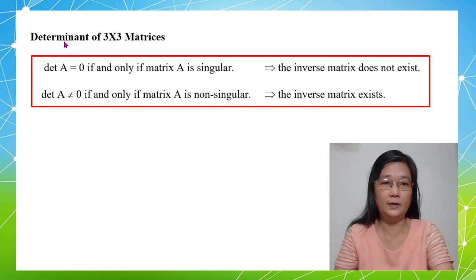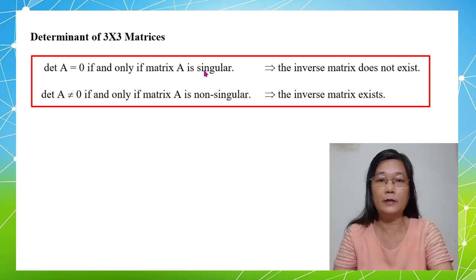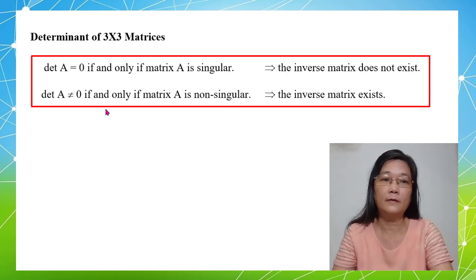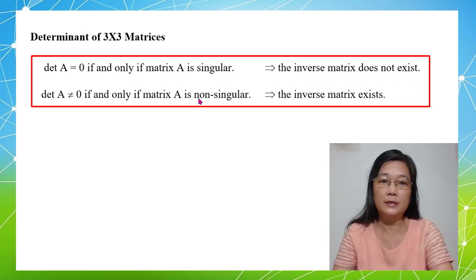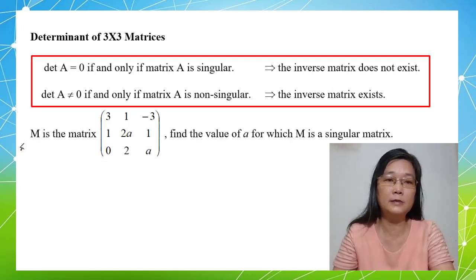Now we have learned how to find the determinant of a 3x3 matrix. But why do we need to calculate the determinant? Because if the determinant is equal to 0, this means the matrix is a singular matrix, and if a matrix is singular, then the inverse matrix does not exist. But if the determinant is not equal to 0, this means the matrix is a non-singular matrix. A non-singular matrix means the inverse matrix exists. Now let's take a look at this question.